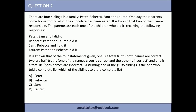Moving to question two — it's fairly similar but has a couple of additional components. Feel free to pause and try it, but don't be disheartened if you can't get the answer because it is more difficult. There are four siblings: Peter, Rebecca, Sam, and Lauren. Out of those four, two of them ate some chocolate and two didn't. The parents ask each sibling for a statement about who did it, and each statement names two people they say are responsible.